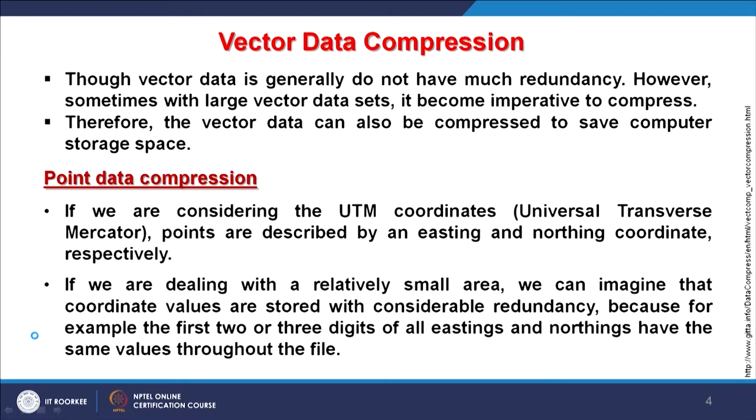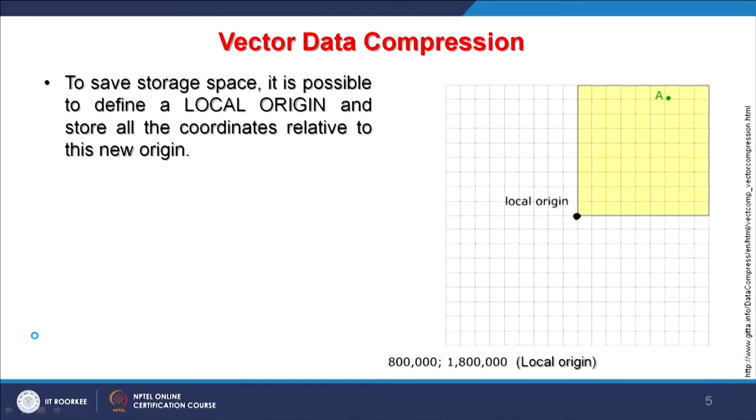If too detailed information is stored — say a track recorded by a GPS, where by default GPS takes a coordinate every second — and my movement or speed may not be that high, I am unnecessarily storing a lot of coordinates not really required for my project. So again I can go for some kind of compression, reduce the inter-nodes, and get a smoother, compressed vector line. This is how we achieve storage compression and then define a local origin.